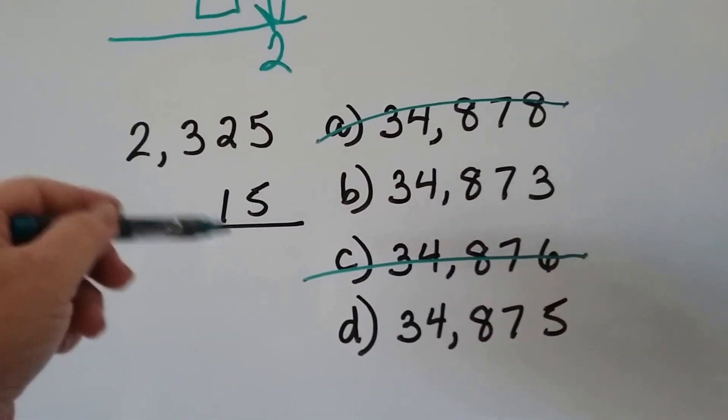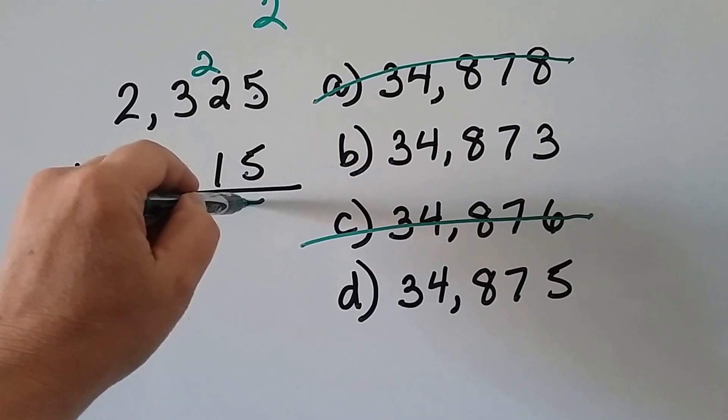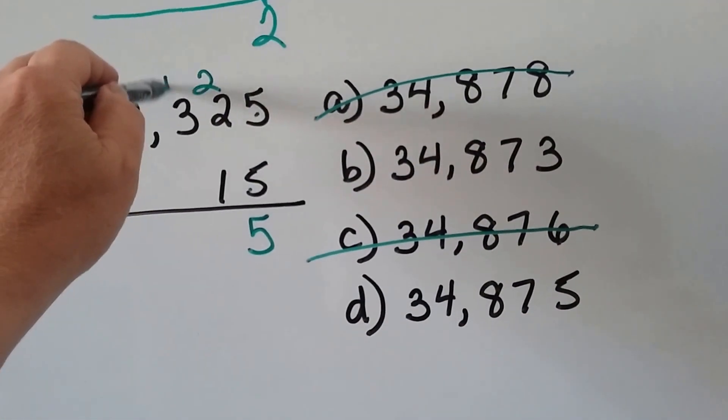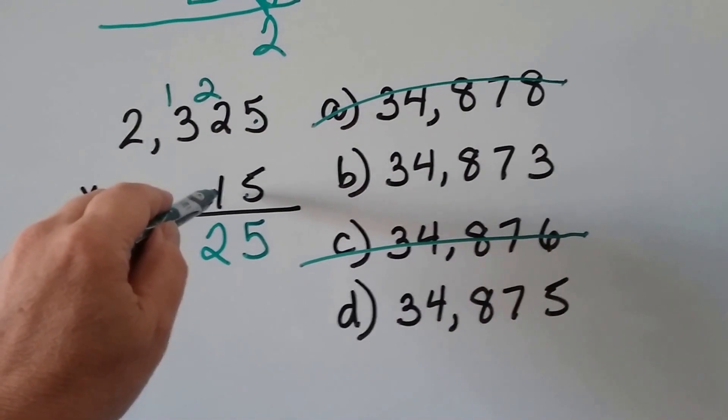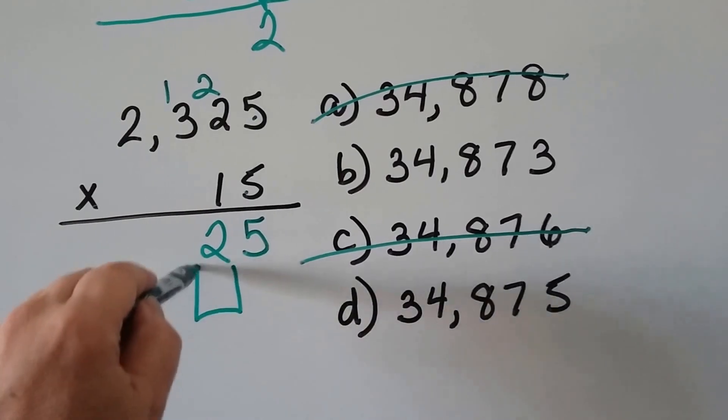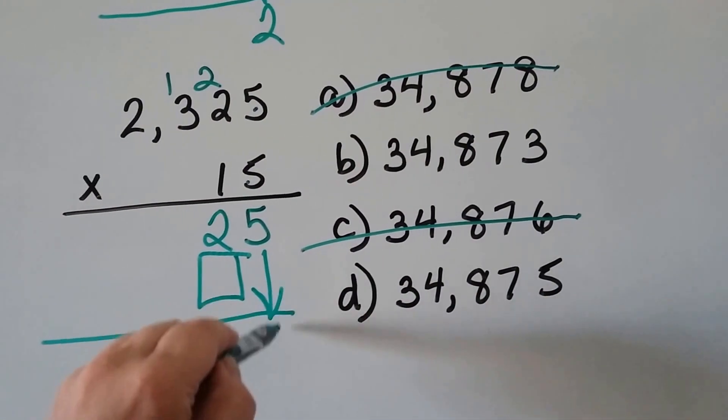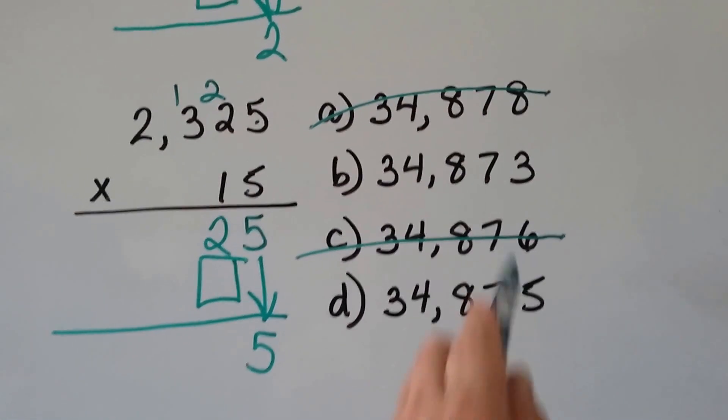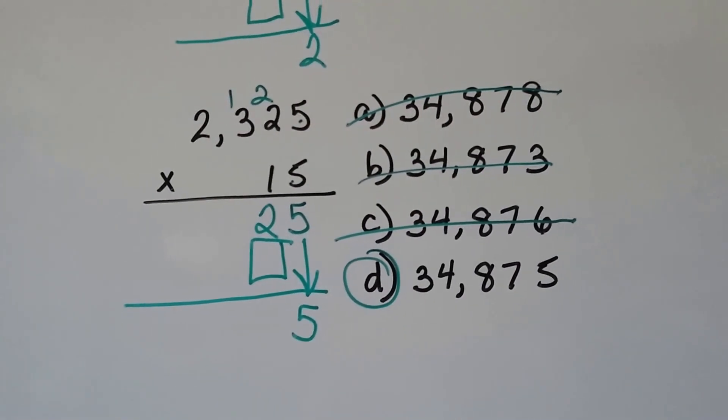So what we do is we start doing our multiplication. Five times five is 25. Carry the two, put the five down. Five times two is 10, 11, 12. Carry the one, put the two down. But wait a minute. When we go to do this one, our answer is going to go right here. And then when we add it, that means the five is going to be in the ones place, isn't it? So guess what our answer is? It can't be that one. That's got a three in the ones place. Our answer has to be D. We didn't even finish the problem.